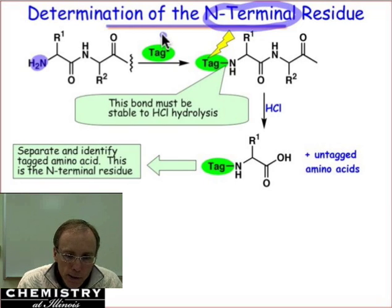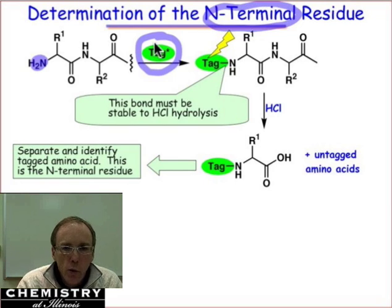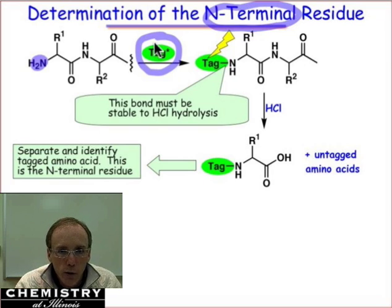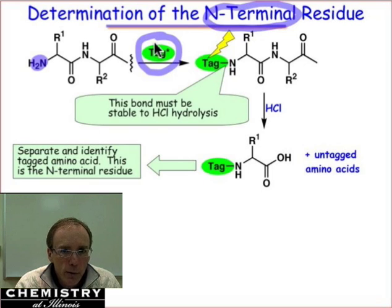The amino group is reacted specifically with a tag molecule. The tag is something that bears a unique chemical or spectroscopic signature, such as the absorption of light at a particular wavelength, or fluorescence at a particular wavelength, where none of the amino acids give rise to that same kind of spectroscopy.